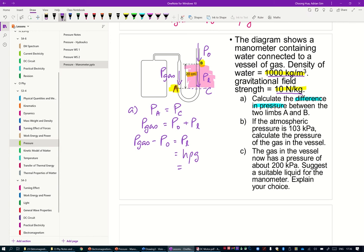And that will give you 2000 N per meter square. So that's the difference in pressure. You have to convert 20 cm to SI unit. That's 0.20 times 1000 times 10 and that will give 2000 N per meter square.